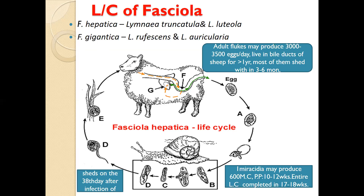Gymnocephalous cercaria means they have a naked head. These cercaria shed from the snail tissues after the 38th day post-infection. The cercaria transform into cysts using a sticky substance released by the cystogenous glands in the head region, forming the metacercaria stage. Under favorable conditions, metacercaria remain viable up to 12 months. The final host is infected when metacercaria are ingested with vegetation. The total pre-patent period is about 10 to 12 weeks, and the entire life cycle is completed in about 17 to 18 weeks.